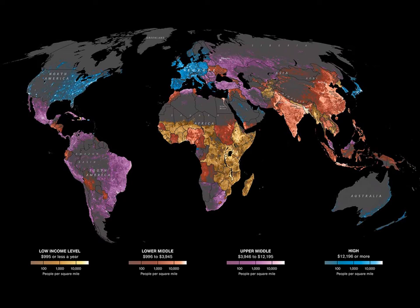The lower-middle income ranges are in areas like India, China, and parts of South America. The upper-middle income range, which today applies to China, is largely located in South America, Mexico, and parts of Eastern and Central Europe. The high-income regions are Europe, North America, Japan, South Korea, and Australia.